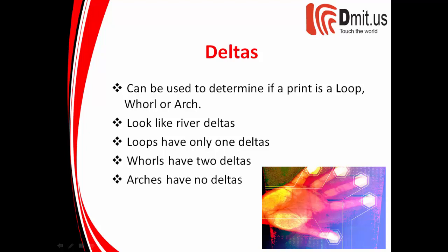As I mentioned in the previous video, the delta is an area that can be used to determine if the print is going to be a loop, a whorl, or an arch. It looks kind of like a river delta, and that's why it was named that way. Loops only have one delta, whorls have two deltas, and arches have no deltas.